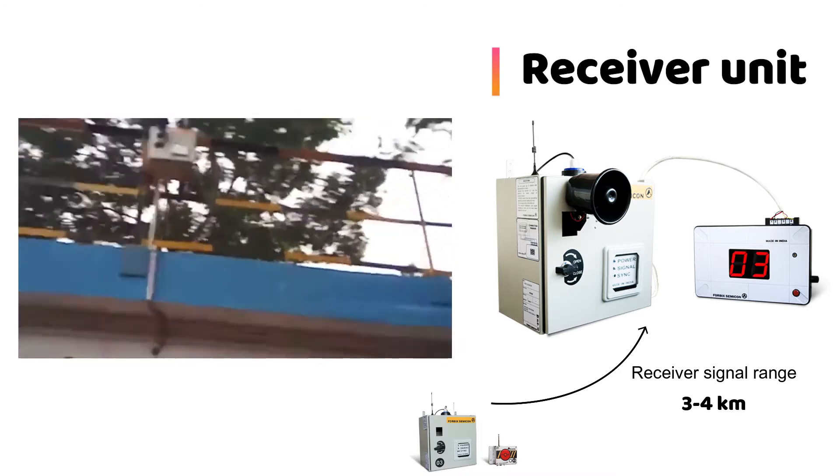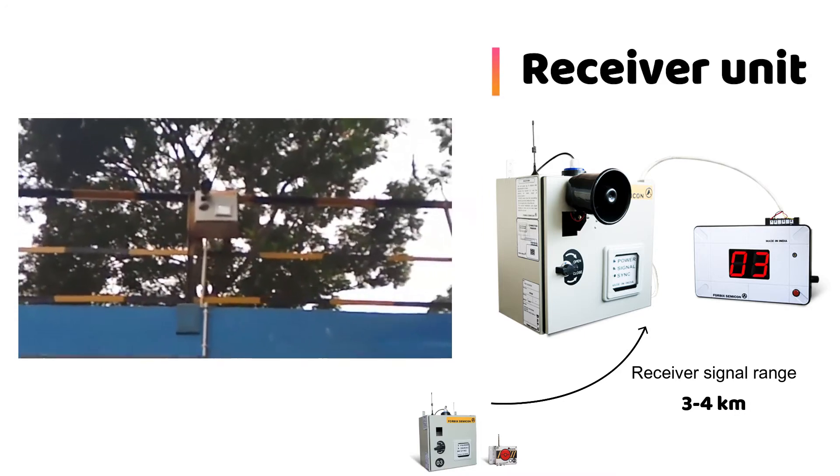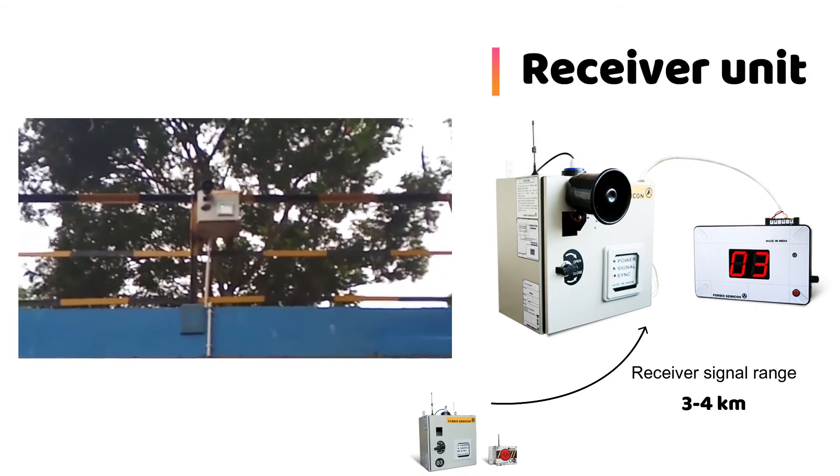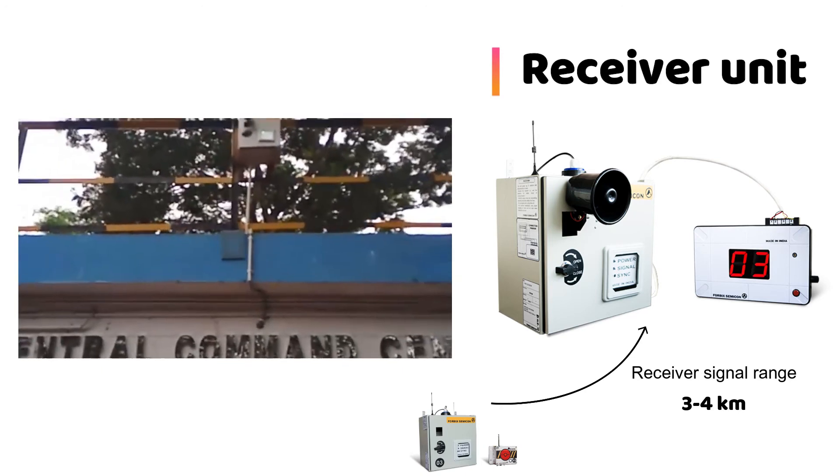You can see the receiver box. Only a green light is shown, which is the power signal. Now, one person has gone to press the panic button.